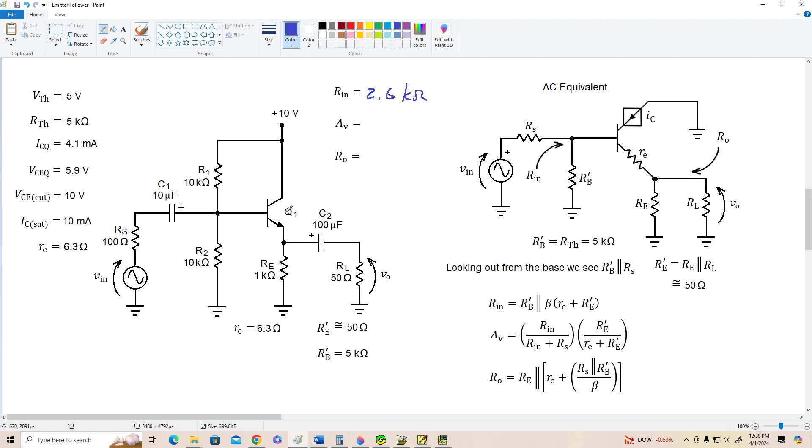Alright, now that's the whole idea why we use this amplifier. This source thinks it's driving 2,600 ohms instead of 50 ohms. So the amplifier is acting as a buffer between the source and the load.